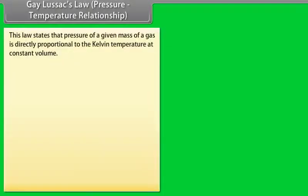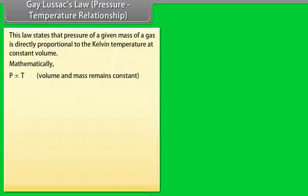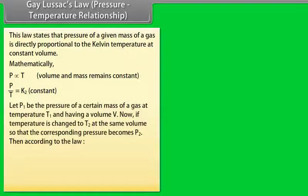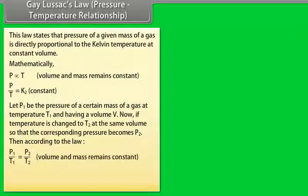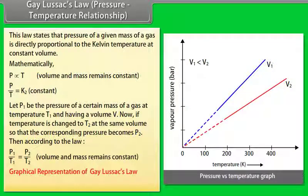Gay-Lussac's Law — Pressure-Temperature Relationship: this law states that the pressure of a given mass of a gas is directly proportional to the Kelvin temperature at constant volume. Mathematically, P ∝ T at constant volume and mass; P/T = K₂. Let P₁ be the pressure at temperature T₁. If temperature is changed to T₂ at the same volume, the pressure becomes P₂. According to the law, P₁/T₁ = P₂/T₂, with volume and mass remaining constant. Each line of the pressure-versus-temperature graph is called an isochore.